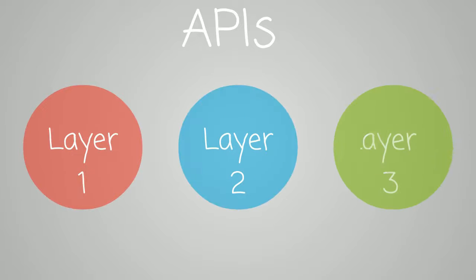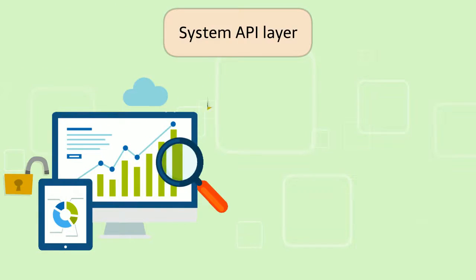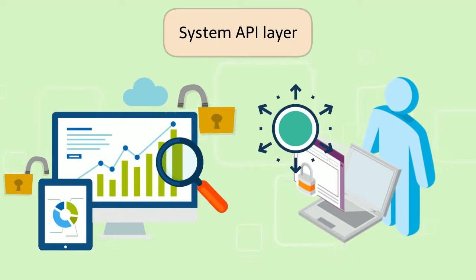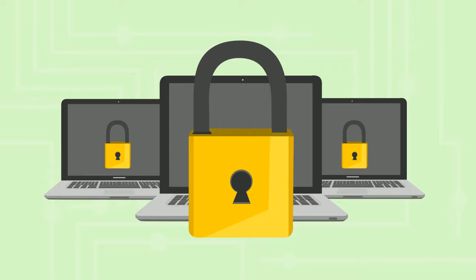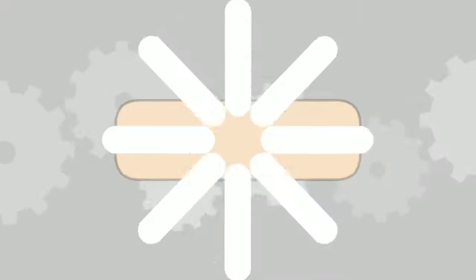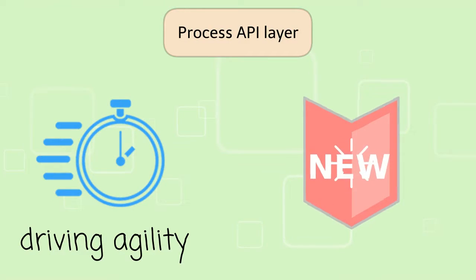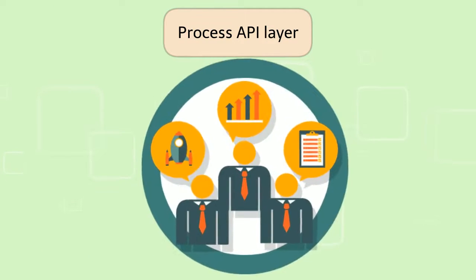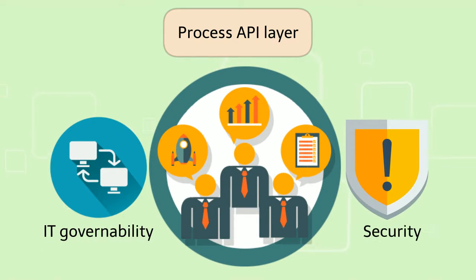APIs are implemented in three layers. The System API Layer is all about unlocking data assets and decentralizing data access — making data available with security in place. The Process API Layer is all about driving agility and new value creation, enabling line-of-business self-service with IT governability and security in place.